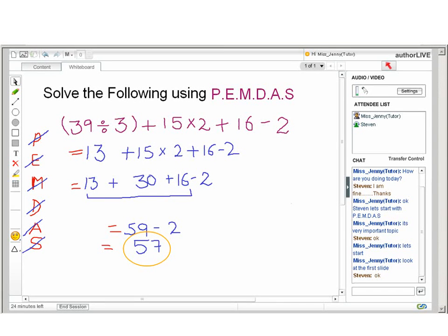Now let's see one more example. Solve (39 ÷ 3) + 15 × 2 + 16 - 2, where 39 ÷ 3 is in parenthesis. Now use the simple rule PEMDAS and solve the operations within parenthesis first. We will get 13 + 15 × 2 + 16 - 2.